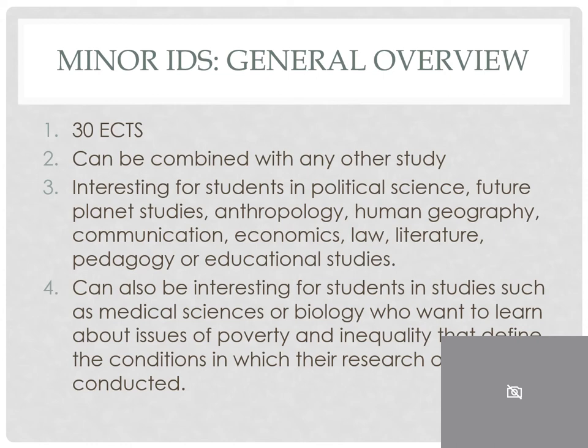Let's get to the details of the program. The minor is 30 credits, as are all the minors in the bachelor program. It can be combined with any other study. We usually have a large group of students coming from the social sciences — from political science, future planet studies, anthropology, human geography, communication — but also from economics, from law, from literature, pedagogy, or educational studies. So there's a relatively broad, multi-disciplinary interest in the minor. It can also be interesting for students even outside the social sciences. Students from the medical sciences, biology, or physics have joined the minor, motivated usually to learn about issues of poverty and inequality that define the conditions in which their own research and scholarly development takes place.